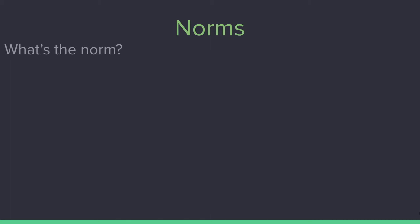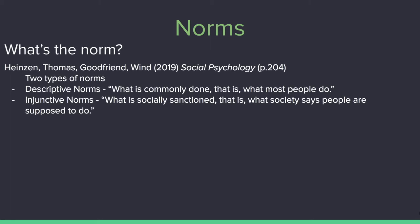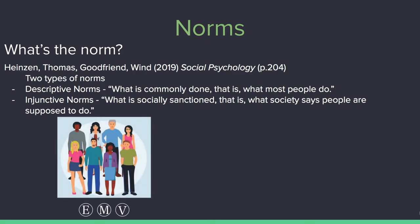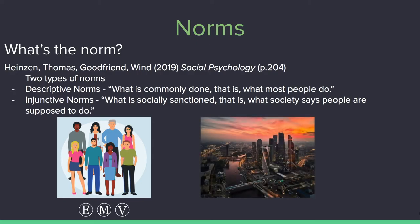So, norms. What's the norm? According to Thomas Heinzen and Wynne Goodfriend in their social psychology textbook, there are two types of norms: descriptive norms and injunctive norms. Descriptive norms refer to what is commonly done — that is, what most people do — and injunctive norms refer to what is socially sanctioned — that is, what society says people are supposed to do. So, as people develop their ethics, morals, and values, they develop a set of beliefs. As societies and communities develop with people that share these beliefs, these become norms.